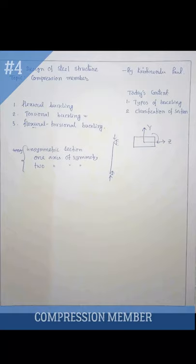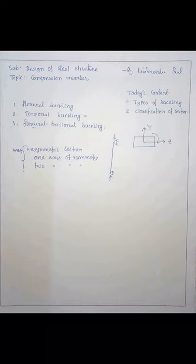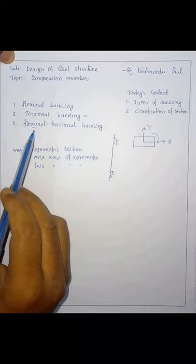Today we will cover some theory from compression members. Today's content is types of buckling and classification of sections. Buckling is of three types: flexural buckling, torsional buckling, and flexural torsional buckling.